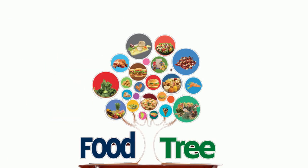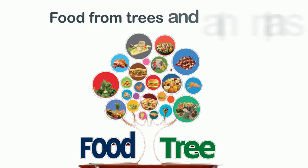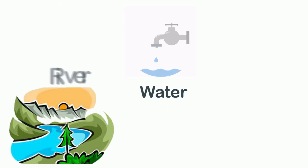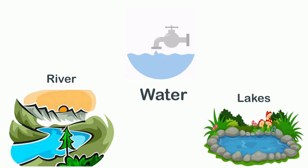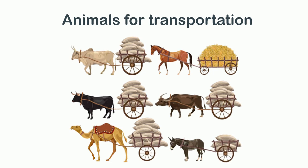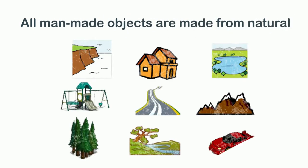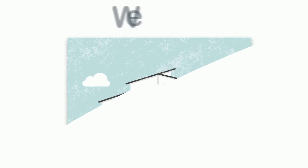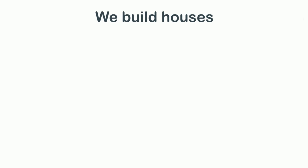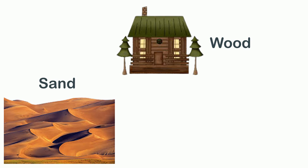Humans use living and non-living things such as food from trees and animals, water from rivers and lakes, and animals for transportation. All man-made objects are made from natural objects, such as we build houses and other buildings using wood, sand, and rocks.